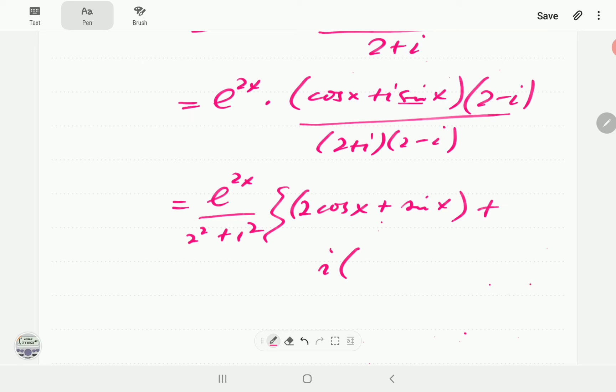So if we start with i sin times 2, then that's going to be 2i sin x. Then the last and the first here is going to be minus i cos x, close brackets.